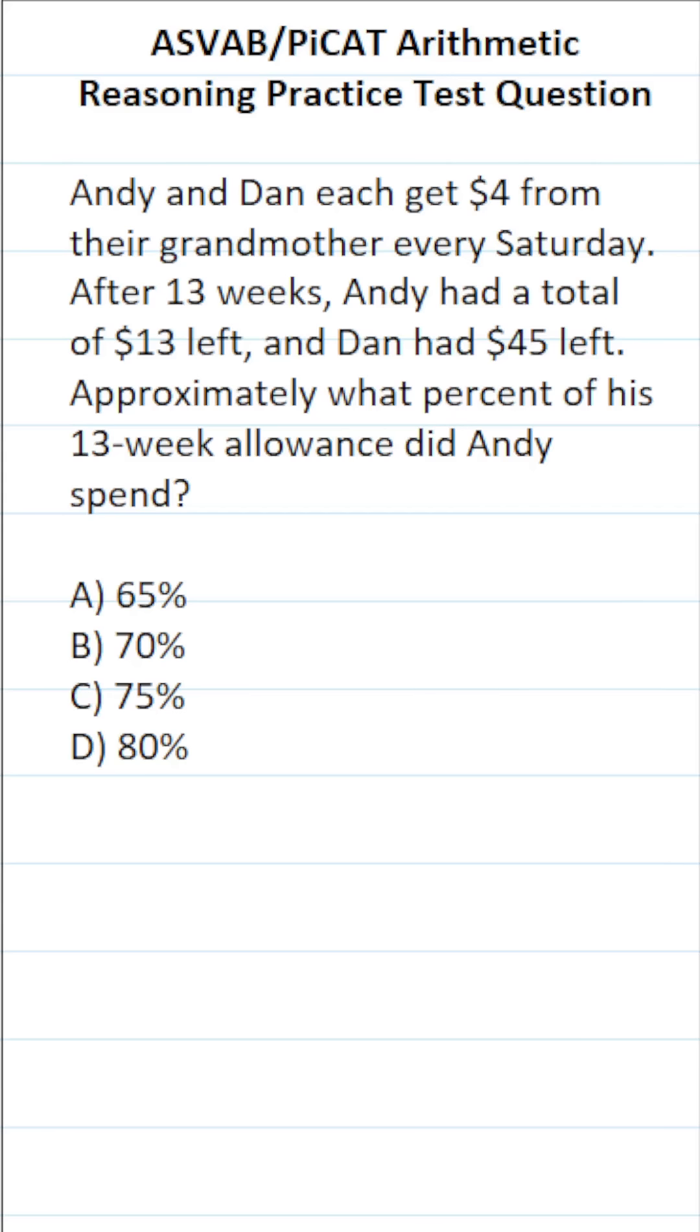This arithmetic reasoning practice test question for the ASVAB and PiCAT says Andy and Dan each get $4 from their grandmother every Saturday. After 13 weeks, Andy had a total of $13 left and Dan had $45 left. Approximately what percent of his 13-week allowance did Andy spend?